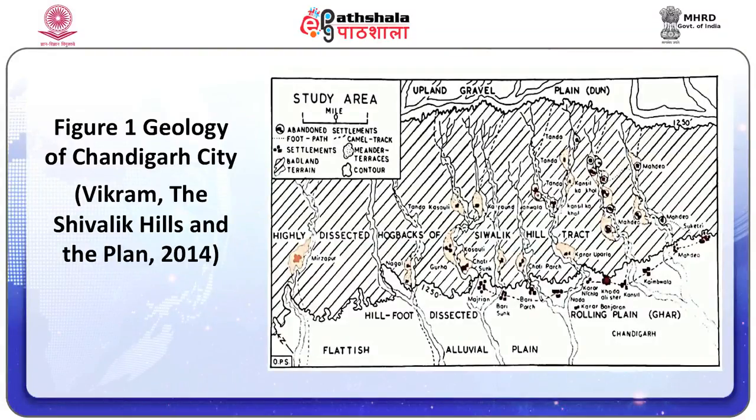The then Indian Prime Minister Jawaharlal Nehru envisioned Chandigarh city as a symbol of the nation's faith in the future, free from the traditions of the past. Therefore its design and construction was a matter of national importance. The city was developed as a symbol of India's modernity and idealism, and European architect Le Corbusier was invited to plan the city, famous for his approaches in architectural modernism.